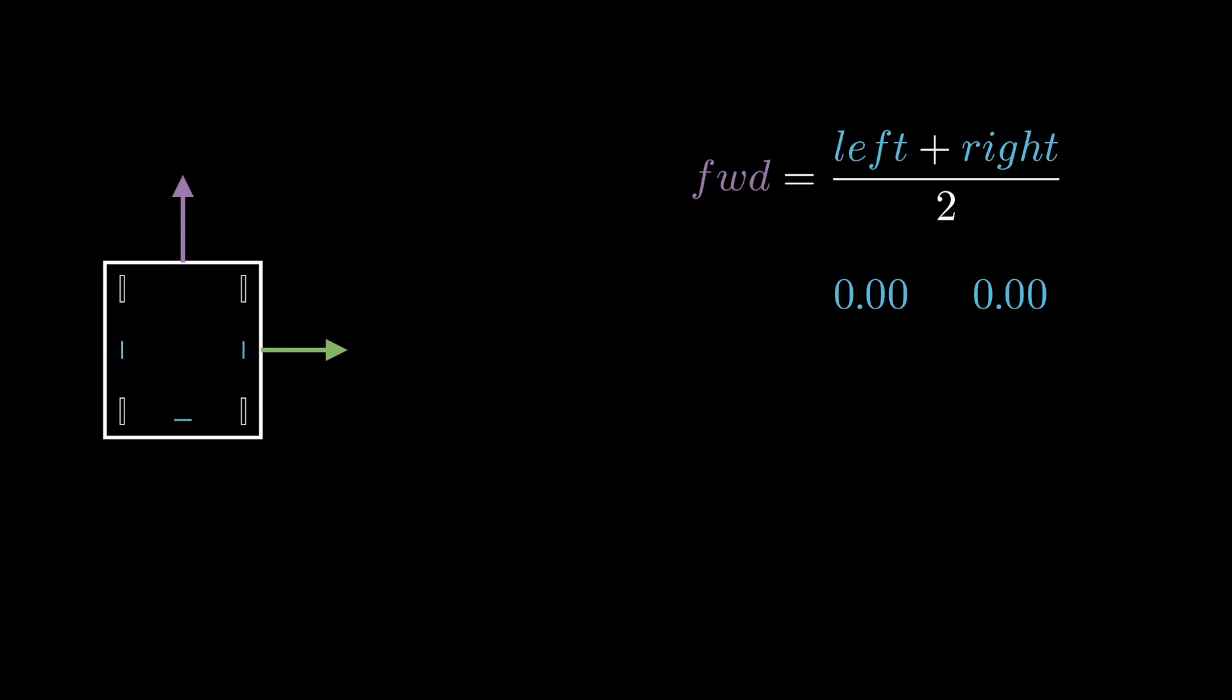The same line of reasoning can be used to find that the rotation is equal to half the difference between the wheels, then divided by the radius of the robot, which in this case is the distance from the center of the robot to the left and right wheels.